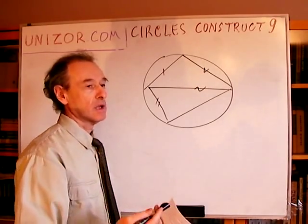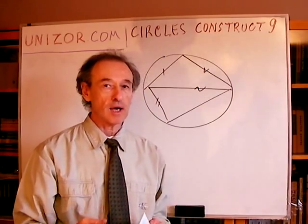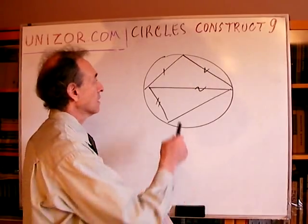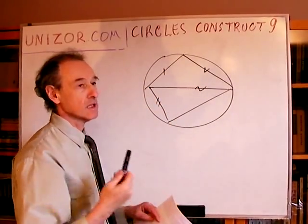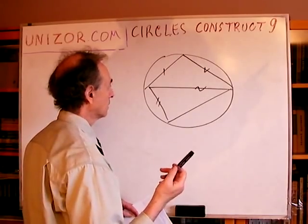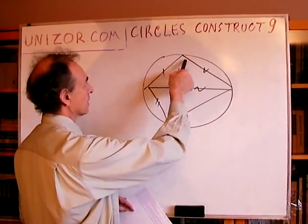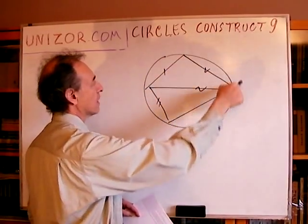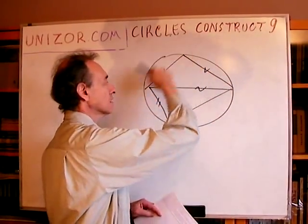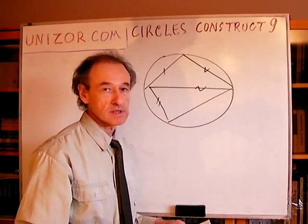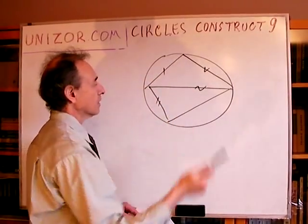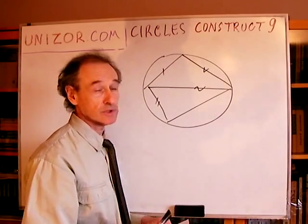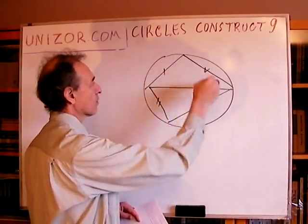If you remember, quadrangles which can be inscribed into a circle have a very interesting property: the sum of opposite angles is 180 degrees. This is because each angle is supported by an arc, and together these arcs make the complete circle, so the two inscribed angles sum to 180 degrees.